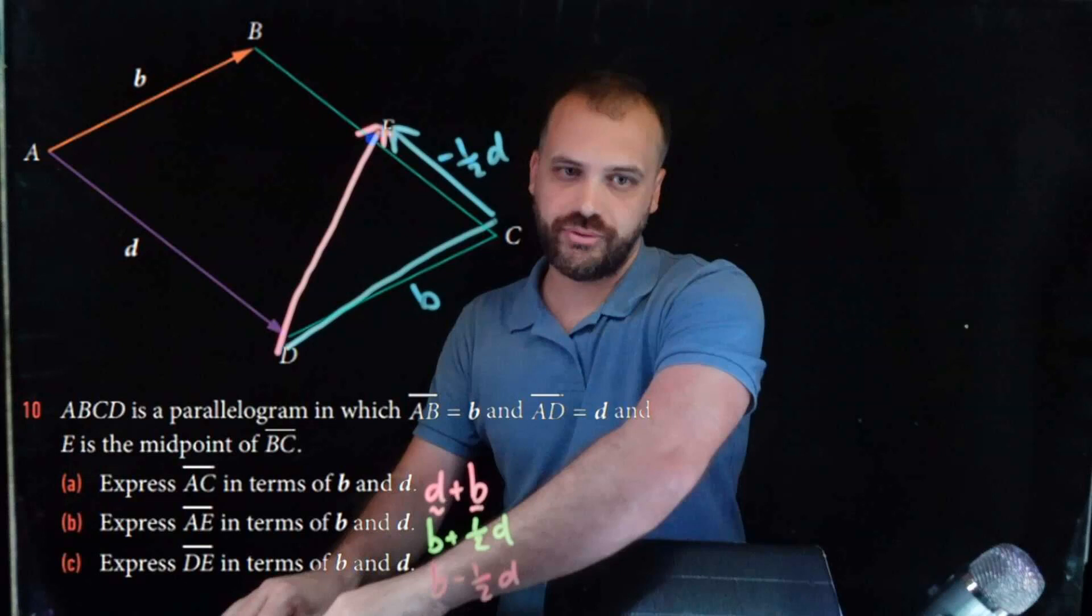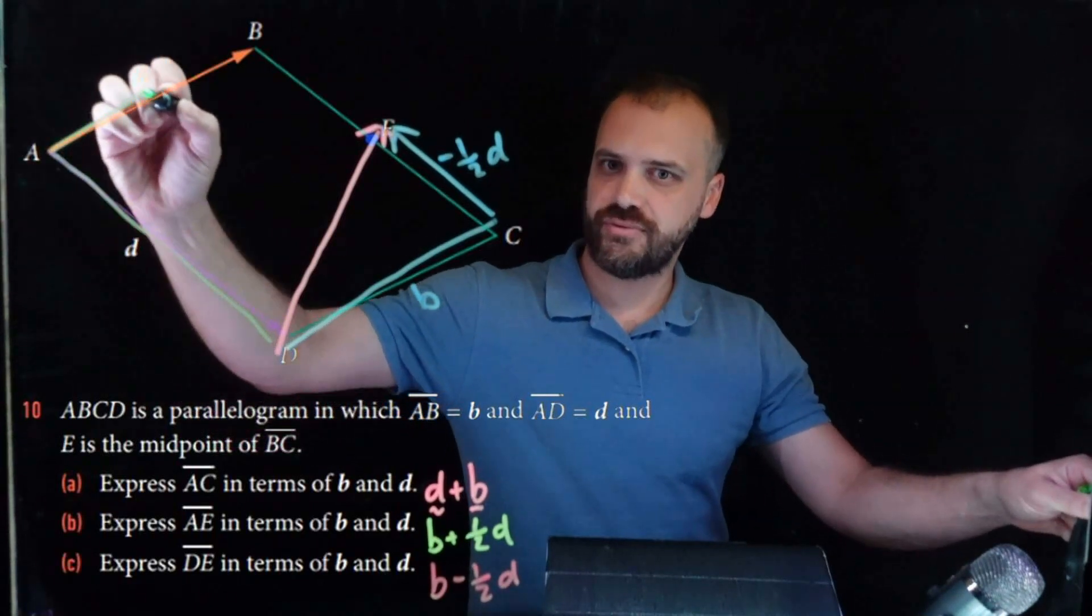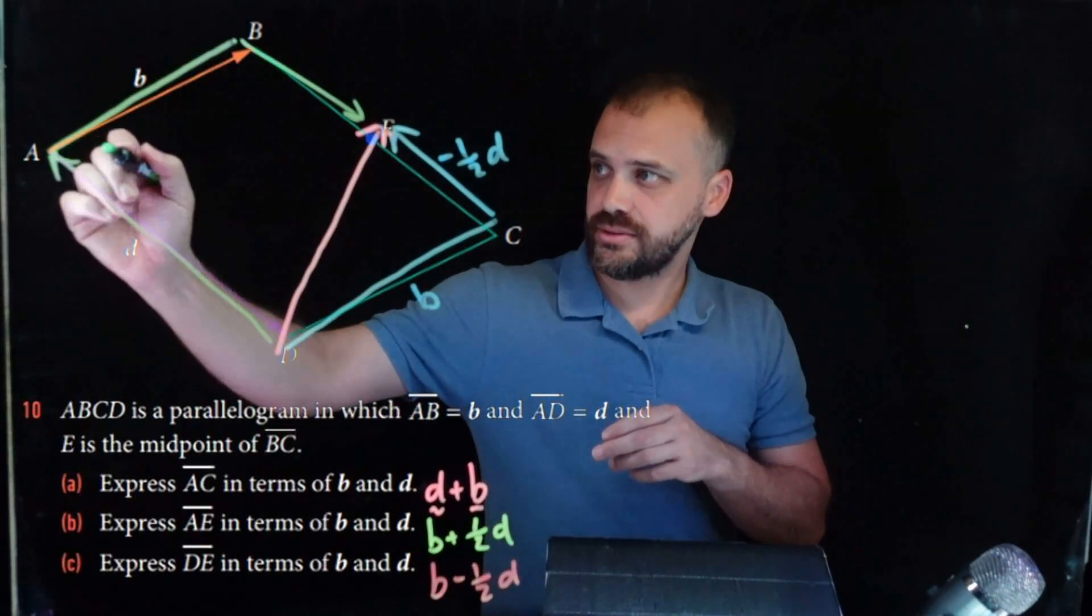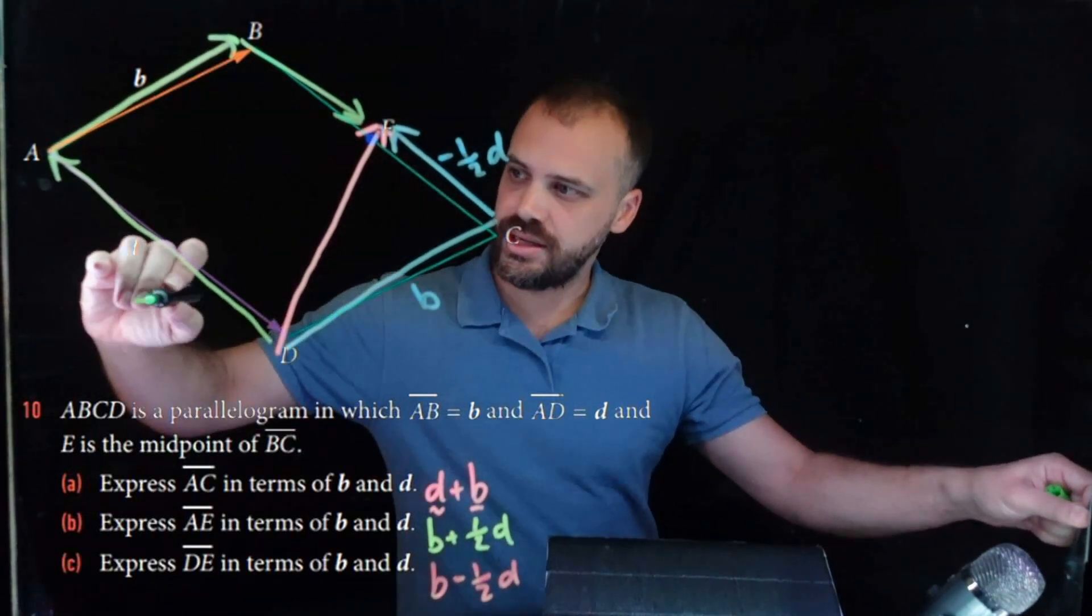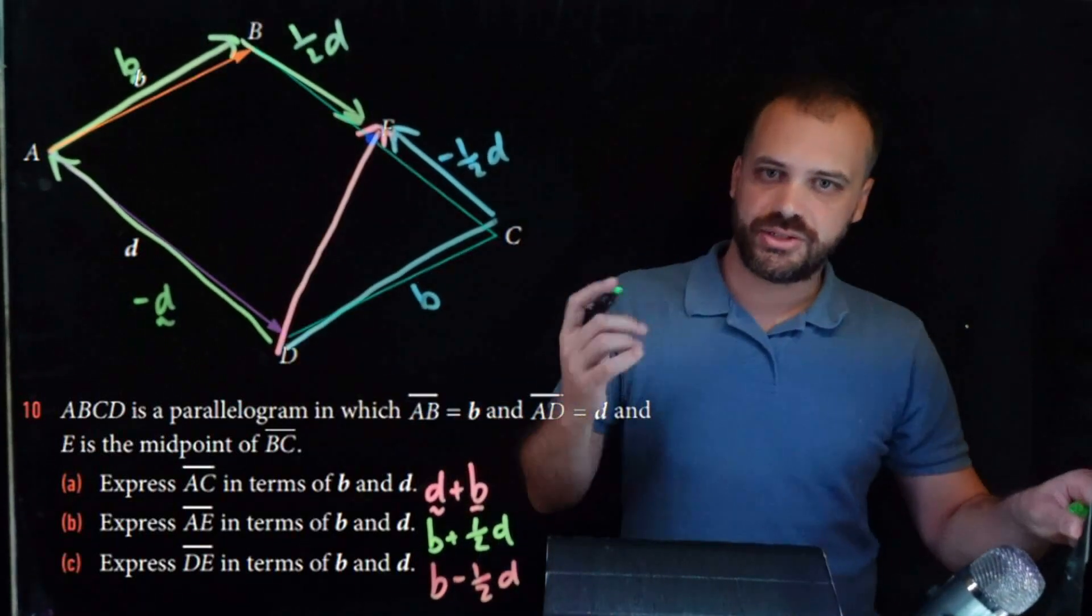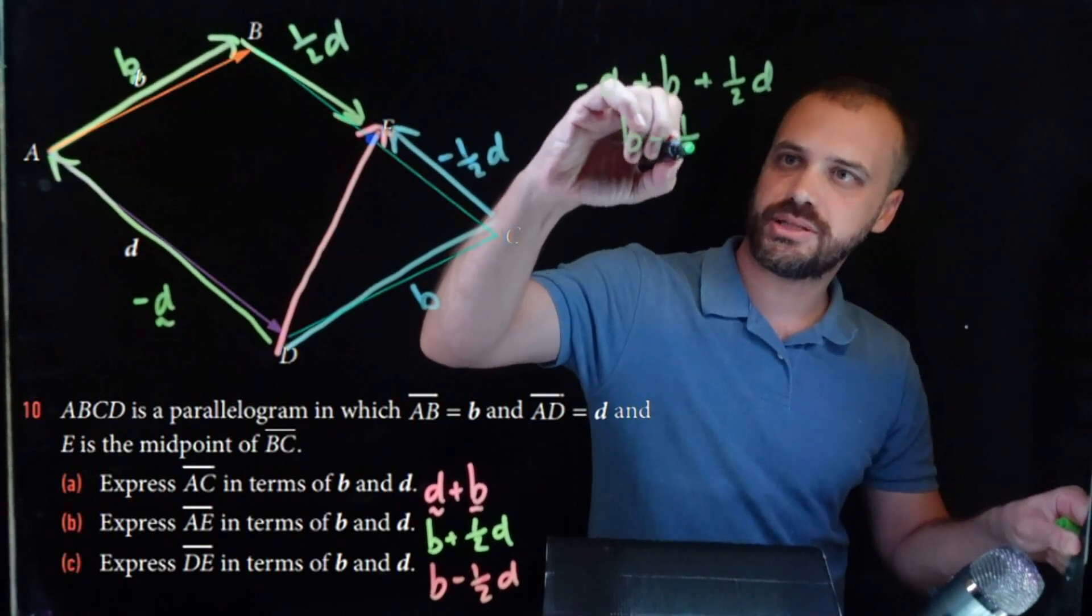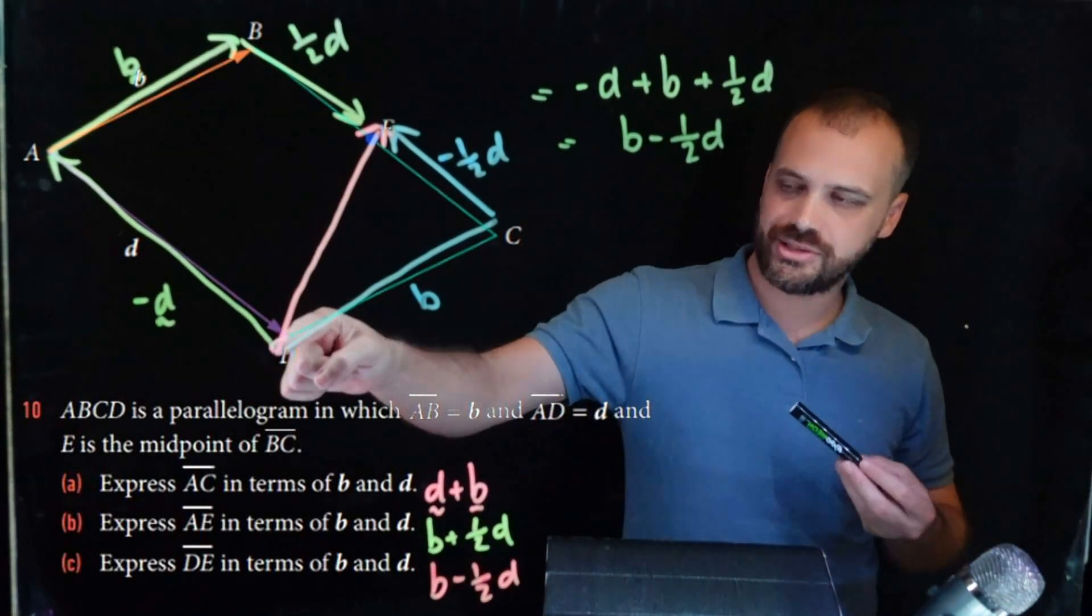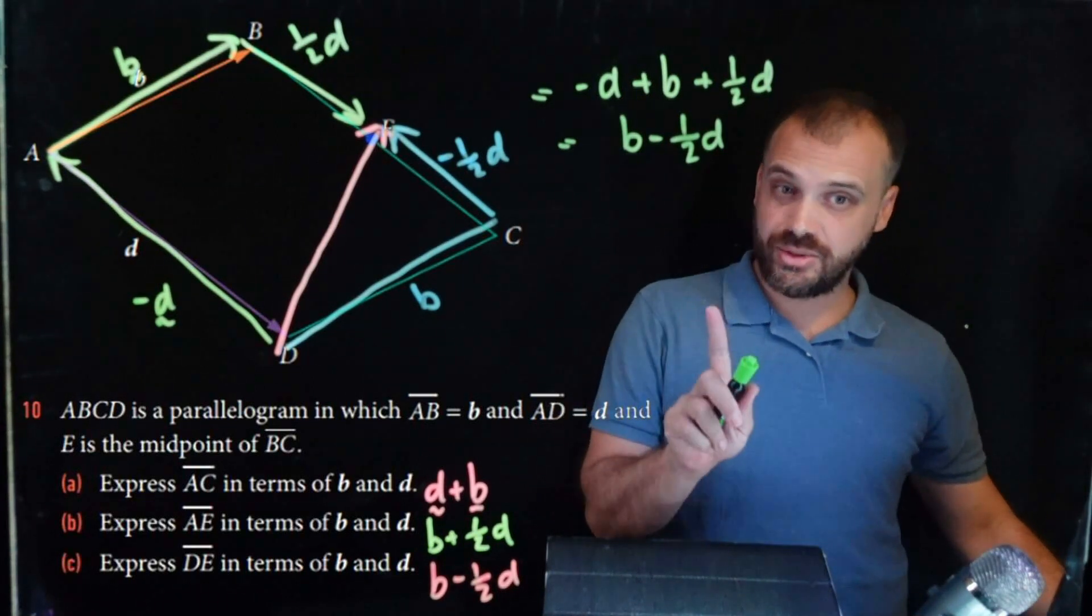Alright, now you could, if you wanted to, solve this in a different way. So you could start here, travel along this vector, then travel along that vector, then travel down along that vector like that. When you add this vector to this vector to that vector, you get that pink vector there. This vector here is negative D. This vector here is B, and that vector there is half D. So if we do negative D plus B plus half D, we get B minus half D, when we simplify that, which is that answer there. My point is, there's more than one way to skin a cat. As long as you travel along these paths, you're going to get to an answer. That was the first three, which are the easy ones.